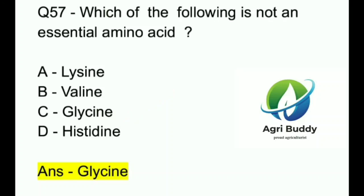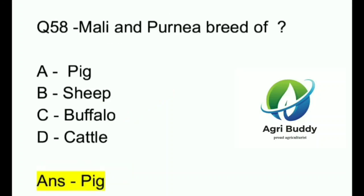Question 58. Mali and Purnia are breeds of? A. Pig. B. Sheep. C. Buffalo. D. Cattle. And the answer is Pig.